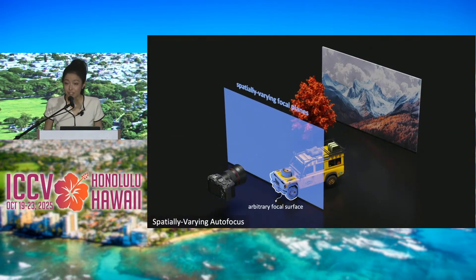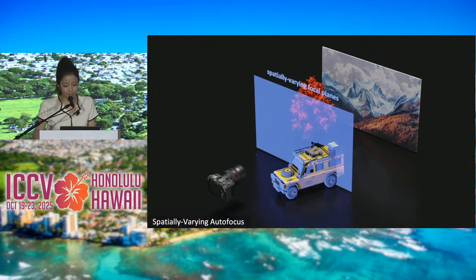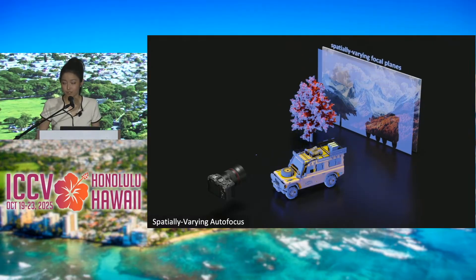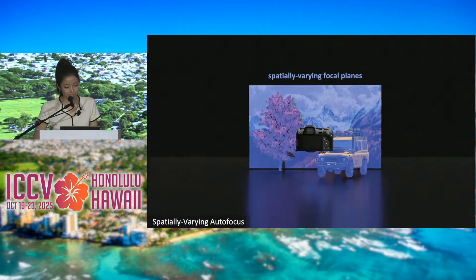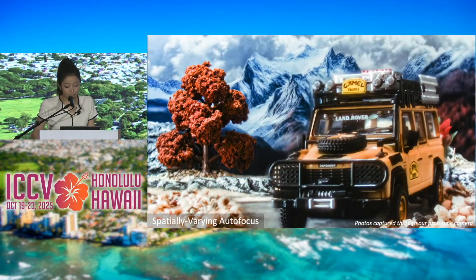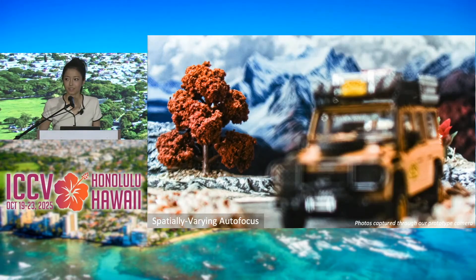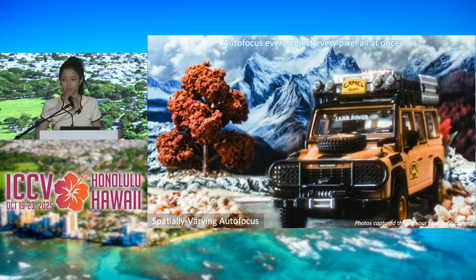Introducing spatially varying autofocus — a technique that allows a focal surface that can dynamically adapt to any three-dimensional structure of the scene. When capturing through the proposed camera, we obtain a single optical capture where everything is in focus. For the first time, we can autofocus every object, every pixel, all at once.